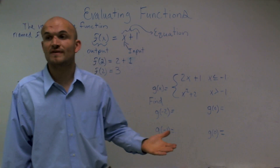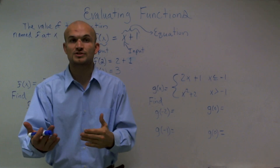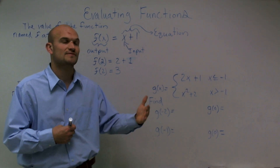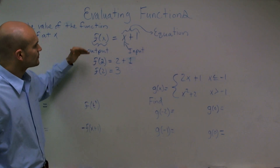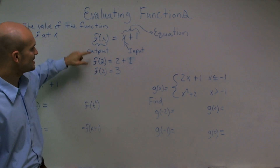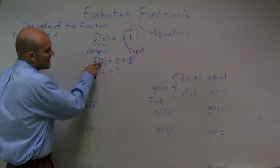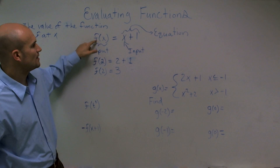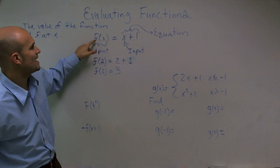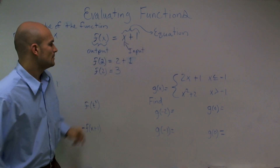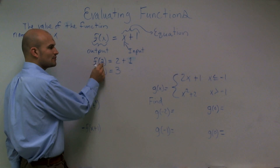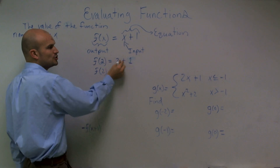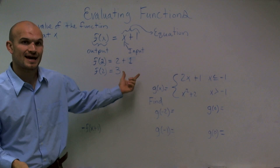My x is still going to be my input value or input variable, just like when we had x's and y's. x was your independent value or your input, and y is going to be your output and your dependent value, meaning it depends on the value of x. The reason why function notation is so important is because let's say I do f of 2 — the value of my function f at 2. I'm going to plug in 2 instead of x, so I have 2 plus 1.